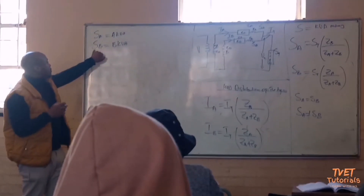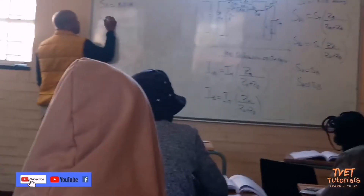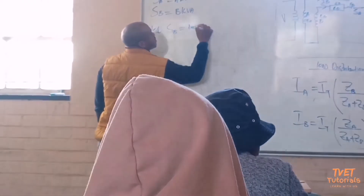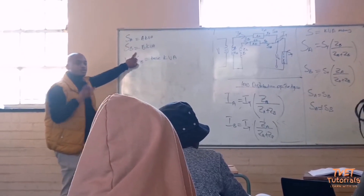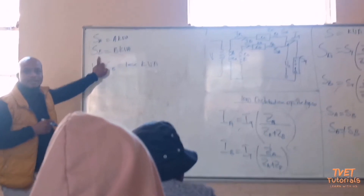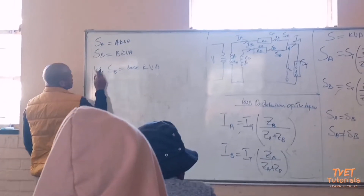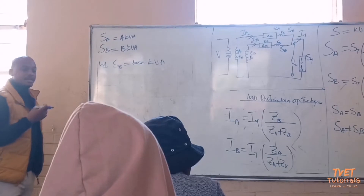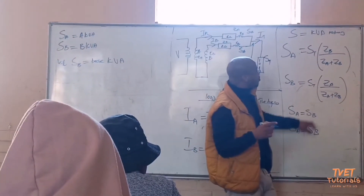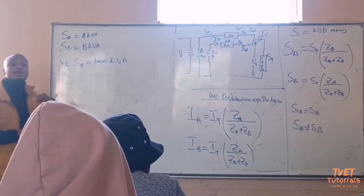For example, if S from Machine B is greater than S from Machine A, you let S from Machine B be equal to your base KVA. Always choose the one that has the biggest KVA. Once you have chosen the base KVA, you then calculate a new ZB and a new ZA so that the condition of impedance equality is met.